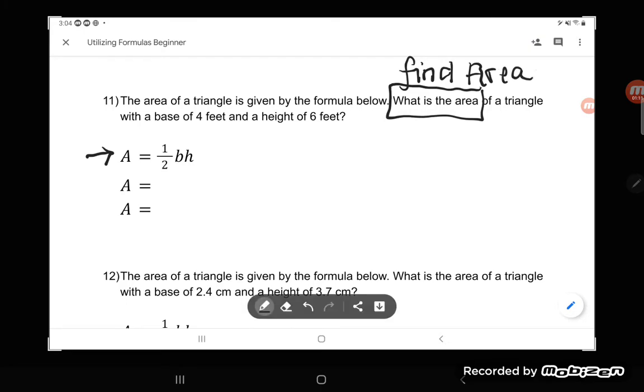With a base of four feet. So I know something about my triangle. I know how long its base is. Its base is four feet. And a height of six feet. Its height is six feet.